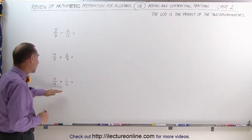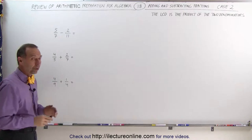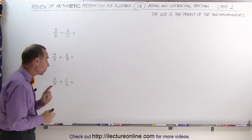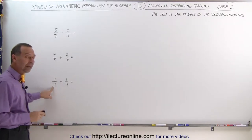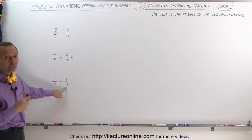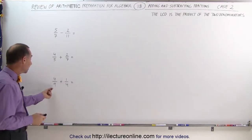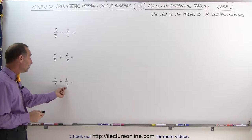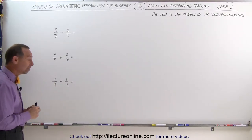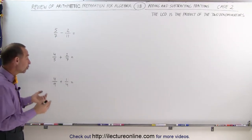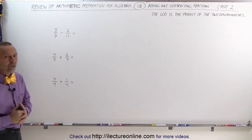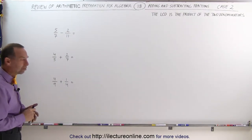In the third case, nine and four are not prime numbers, so you would not expect to have to multiply the two denominators. But if you take a closer look, notice that nine is really the product of three times three, and four is a product of two times two, which means that the factors of nine and the factors of four have nothing in common — they don't have any common factors. And since they don't have any common factors, you're also going to have to find the lowest common denominator by simply multiplying the two denominators together.